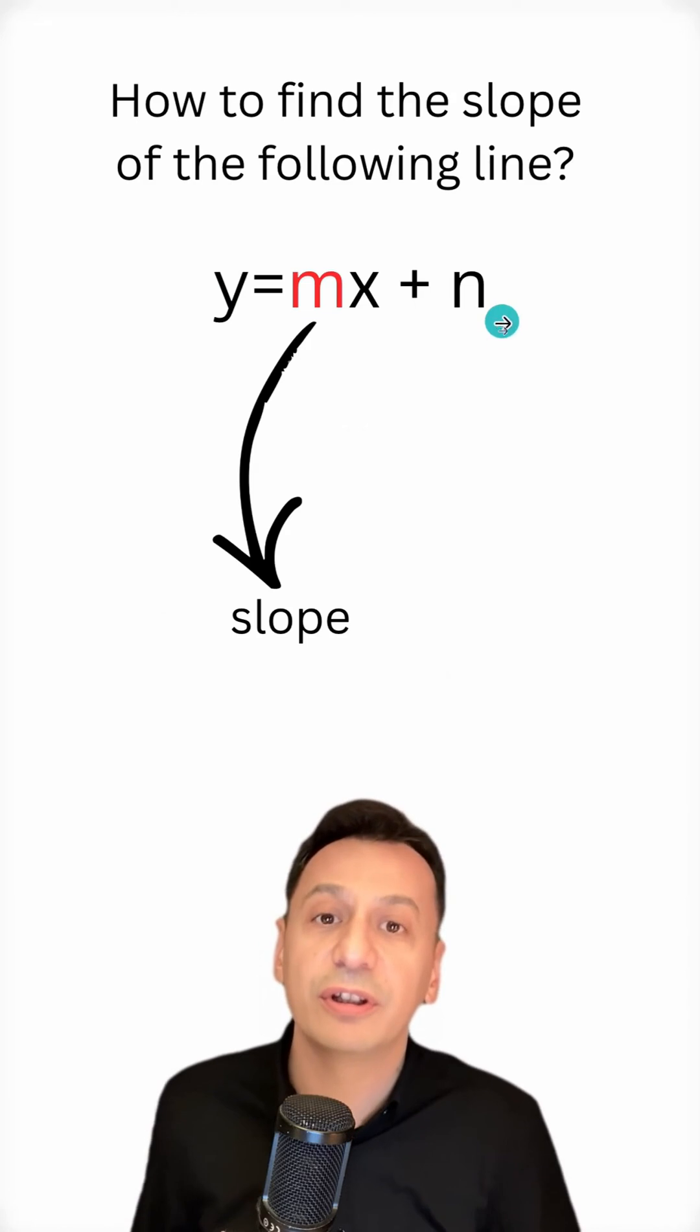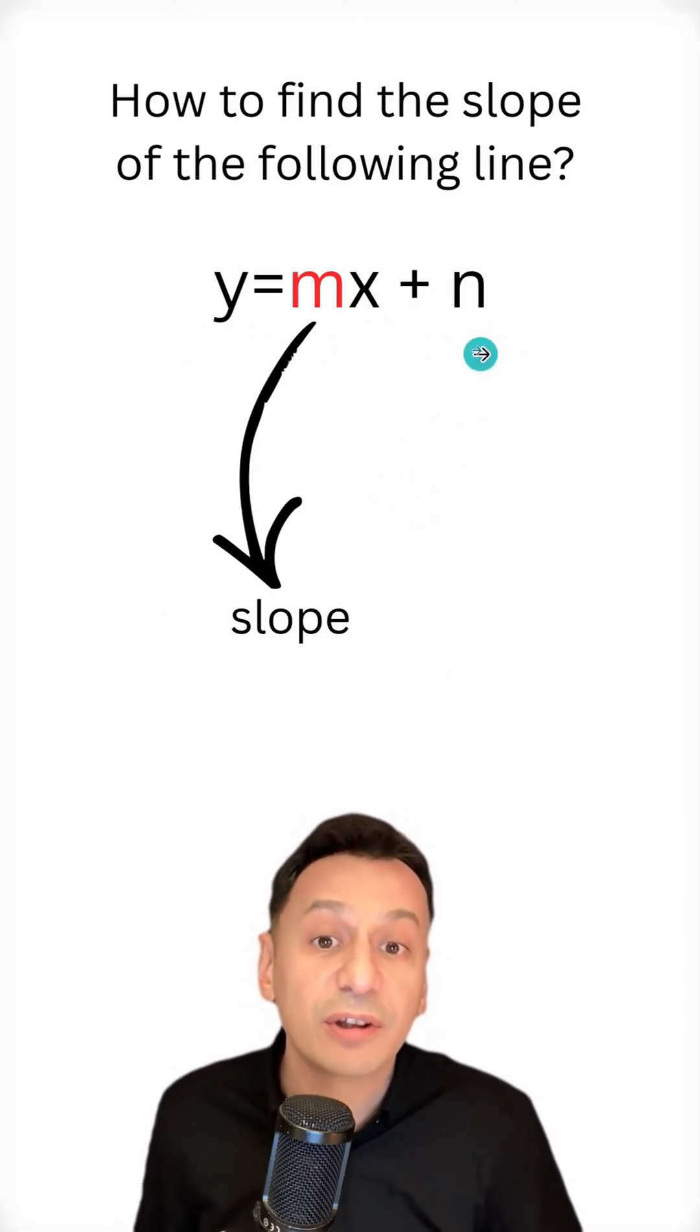So, when the equation is written in the form y equals mx plus n, the slope of the line here is m.